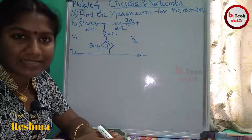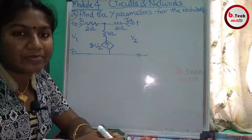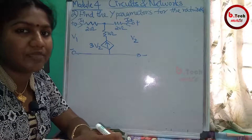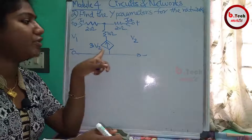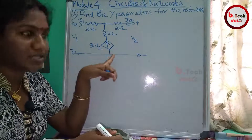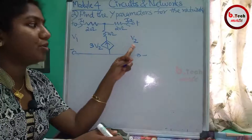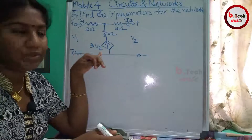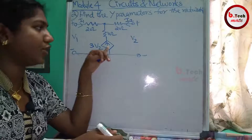Welcome to our next video. We have a problem with a dependent source in a y-parameter problem. This is a 3V2 dependent current source, where V2 is the output port voltage and the current is 3V2.